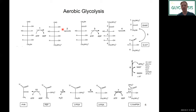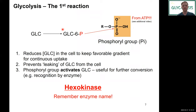The first reaction is the phosphorylation of glucose to glucose-6-phosphate. This is extremely important for several reasons: it reduces the concentration of free glucose in the cell, which maintains a favorable concentration gradient to continue bringing glucose in. There is an additional video on the mechanism details involving ATP.